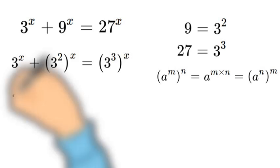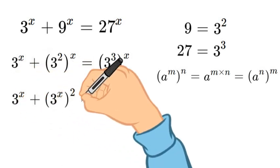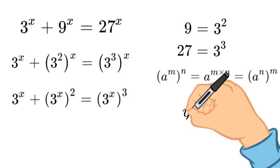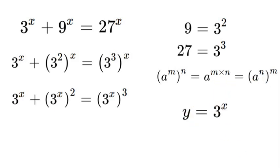So what that would look like is 3^x plus 3^(2x) equals 3^(3x). Now that the base of all of these is equal, we can exchange 3 to the power x for y. Now that we have done that, it'll be a lot simpler to solve for y and then replace 3 to the power of x later on.